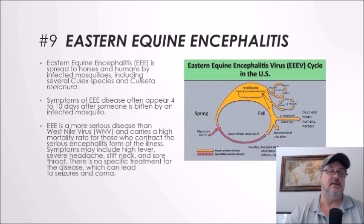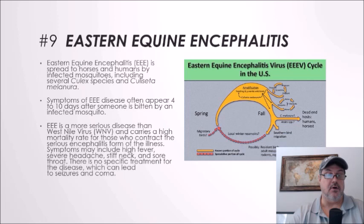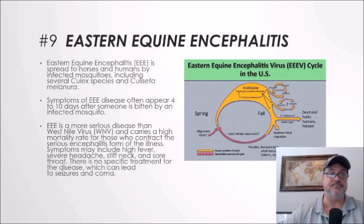Number nine: eastern equine encephalitis. Eastern equine encephalitis, or triple E, is spread to horses and humans by infected mosquitoes including several Culex species and Culiseta melanura. Symptoms often appear four to ten days after being bitten. Triple E is more serious than West Nile virus and carries a high mortality rate. Symptoms may include high fever, severe headache, stiff neck, and sore throat. There is no specific treatment; the disease can lead to seizures and coma, and the fatality rate is about 30%.